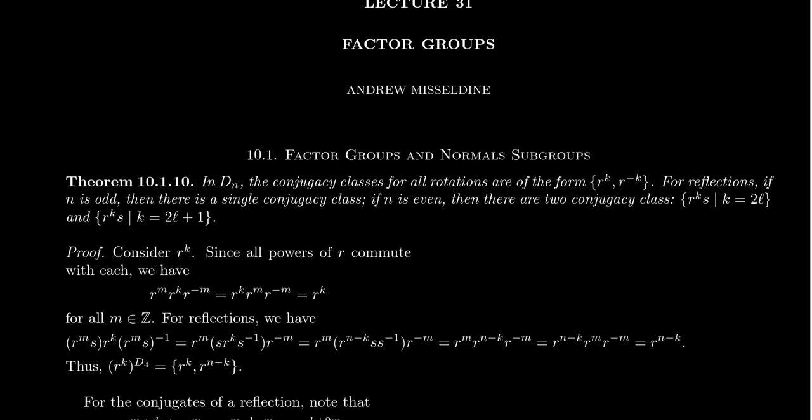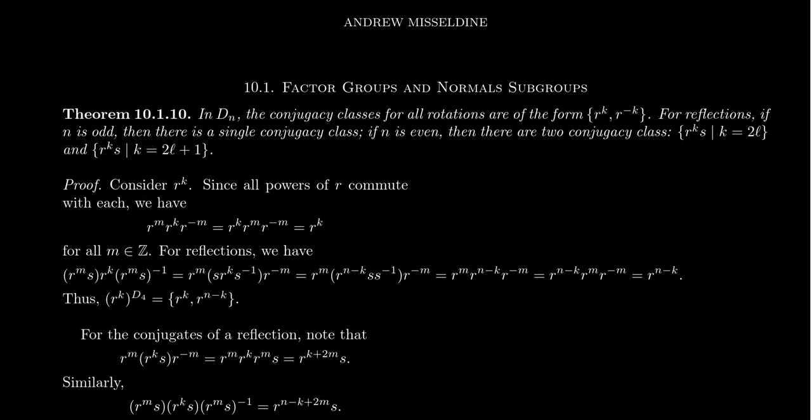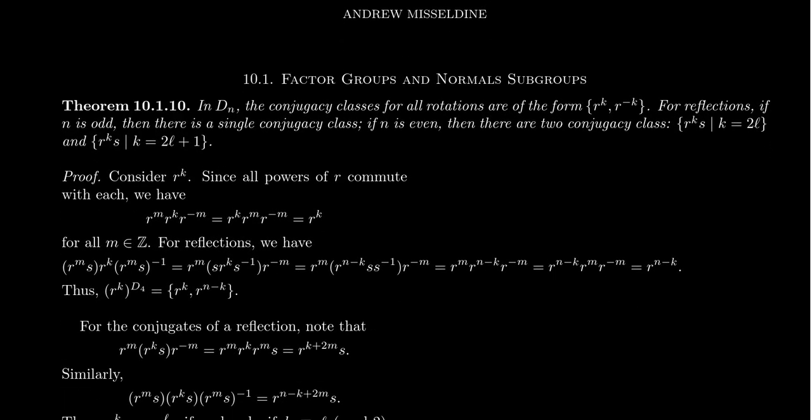In our last video, we actually proved that the conjugates in the symmetric group occur exactly when two permutations have the same cycle structure. In this video, we want to give sufficient and necessary conditions to know when two elements of the dihedral group are conjugates of each other. So let D_n be the order 2n dihedral group — that is, it's the symmetry group of the regular n-gon.